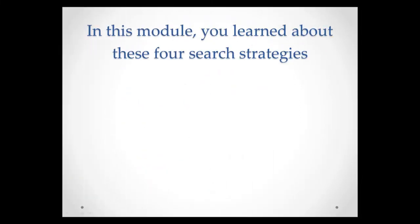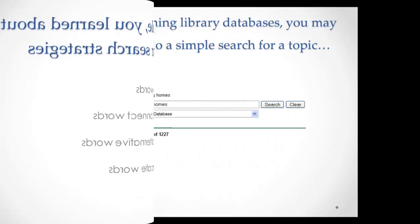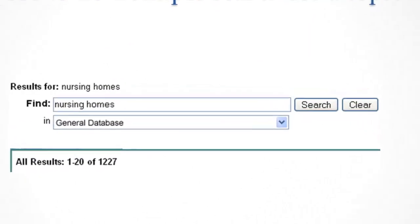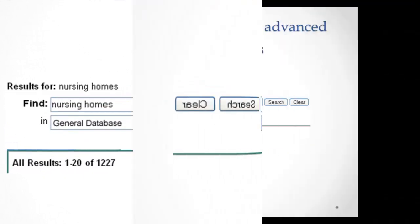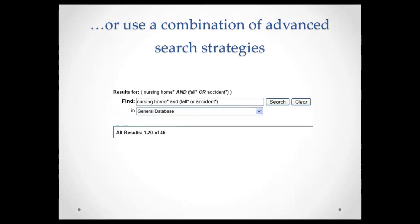In this module, you have learned about the following four search strategies: identify keywords, use AND to connect words, use OR with alternative words, and use the asterisk to truncate words. You may choose to do a simple search for a topic, or use a combination of advanced search strategies to find specific information on your topic.